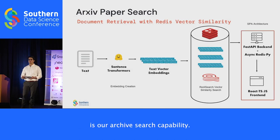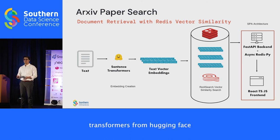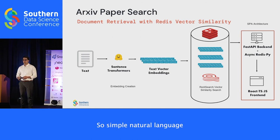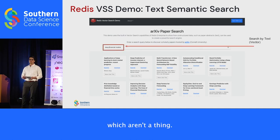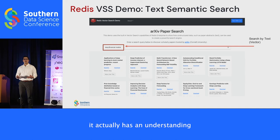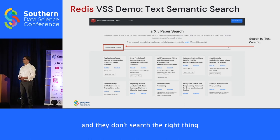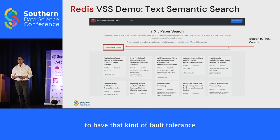One more demo: our arXiv archive search capability. Andrej Karpathy put out a great arXiv sanity demo, and this is in that spirit. We use vector search on paper abstracts with sentence transformers from Hugging Face and the same application architecture, enabling document retrieval based on natural language. For example, searching 'deep financial models' — which isn't a real term — returns relevant results because in a lexicographical search like BM25 this probably returns nothing useful, but here the system understands the language and returns papers about deep learning models in finance.